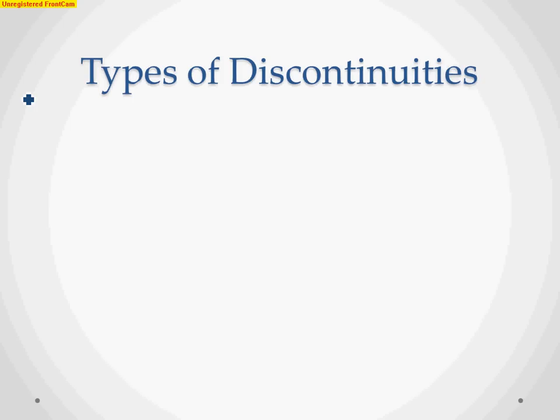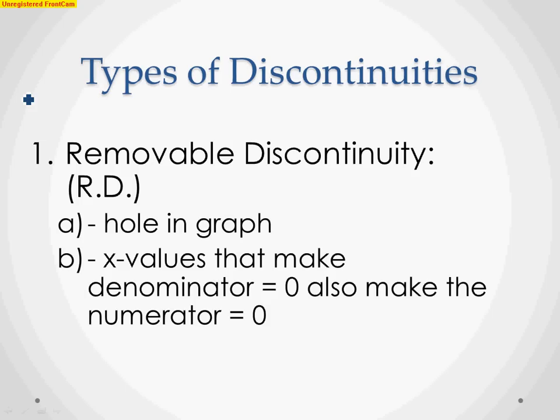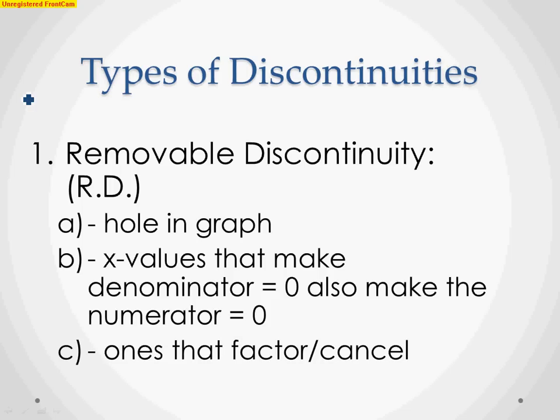Today we're going to talk about types of discontinuities. A continuous function means I can draw the graph without picking up my pencil — a nice smooth curve. A discontinuity is where there are breaks in the graph. There are two types: the first is a removable discontinuity, abbreviated RD. Visually, this is a hole in the graph. These are the x values that make both the denominator and numerator equal to zero, and are the ones that can be factored out or cancelled.